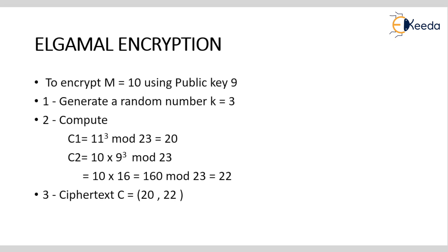We generate a random number key K for the encryption process. K should also be a prime number. We then compute the values of C1 and C2 using the formulas from the previous slide.